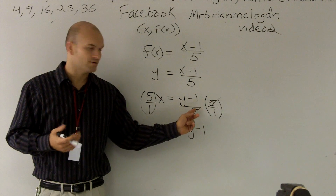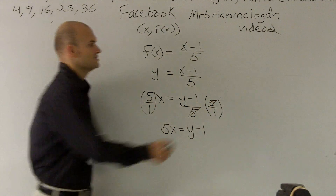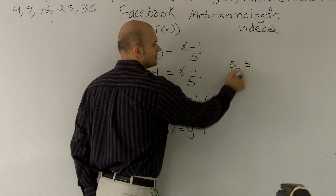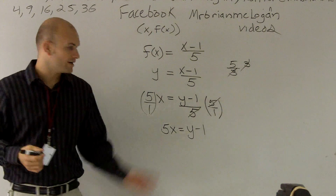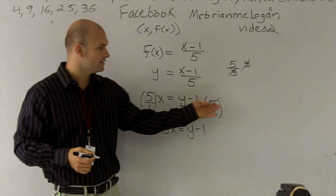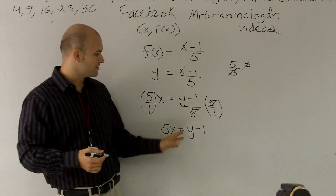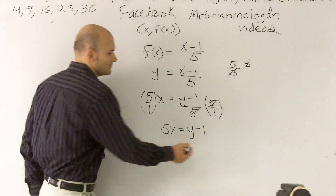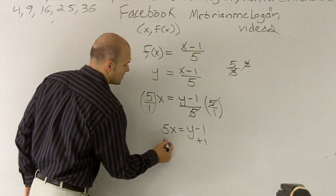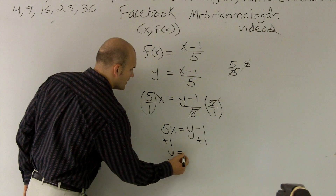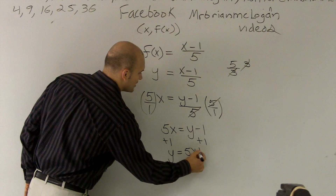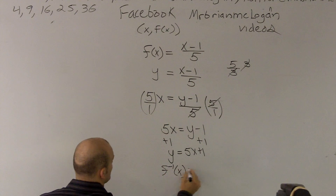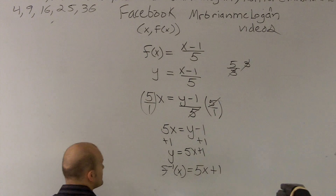So these 5s are going to cancel out — it's the same thing as if you have 5 thirds and you multiply by 3, those 3s cancel out. So here, if I multiply by 5 over 1, the 5s cancel out, and I'm left with y minus 1 equals x, so now I add 1. Therefore, my inverse function is f of x equals 5x plus 1, or we write it as f inverse of x equals 5x plus 1. That's my inverse function.